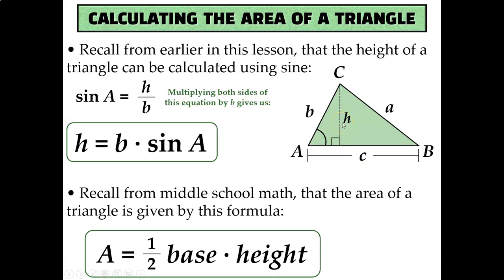The height of this triangle would be the perpendicular length between angle C and side C, which we labeled with an h, and that creates this little right triangle on the left-hand side of the diagram. h is opposite from angle A, and b is the hypotenuse, so we could say that sine of A is equal to h over b, the opposite over the hypotenuse.